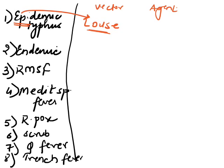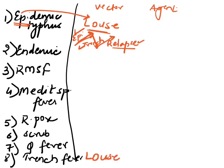Louse is a very notorious arthropod — it spreads very easily, causing an epidemic. When you treat it, you get a trench, and then it relapses again. So first you have epidemic typhus, then trench fever, and again it relapses. For all of these — epidemic typhus, trench fever, and relapsing fever (caused by Borrelia recurrentis) — louse is the vector.